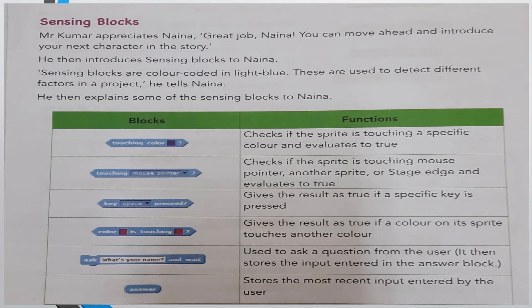Next, Sensing Blocks. Sensing Blocks are color-coded in light blue. These are used to detect different factors in a project. In Sensing Blocks, you can use Touching Color, Keyspace, and Ask Block.